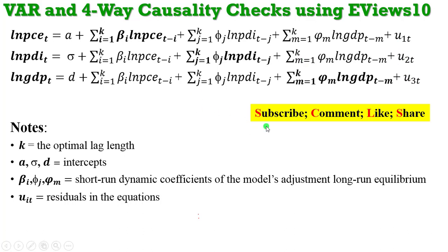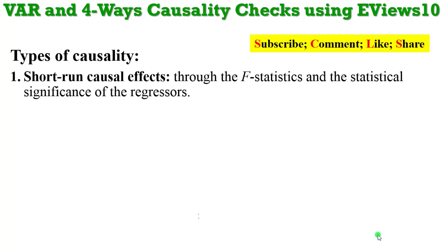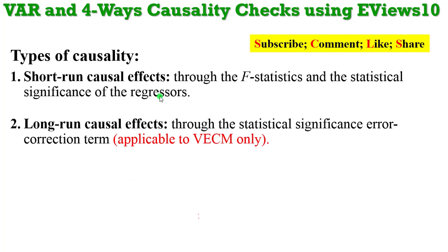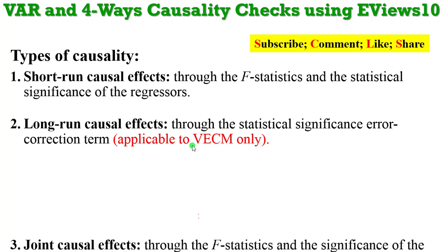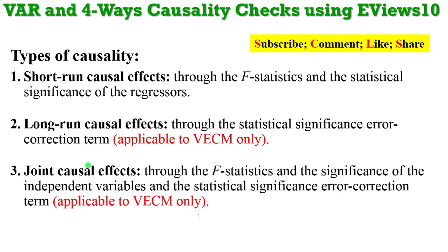Please subscribe to my videos if you have not — I need your comments to improve quality. Short-run causal effects are determined through either the F-statistics of the relevant tests or the statistical significance of the regressors. Long-run causal effects can be determined through the statistical significance of the error correction term, which is only applicable to VECM. Joint causal effects can be observed through the F-statistics, the significance of the independent variables, and the statistical relevance of the error correction term — again, only applicable to VECM.